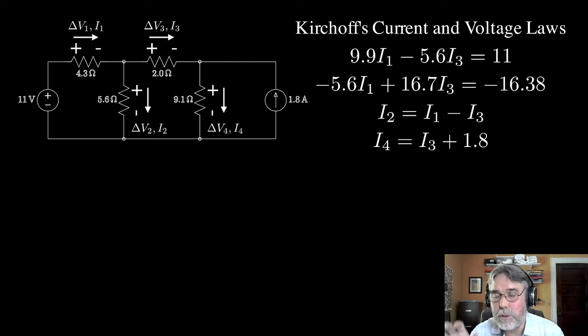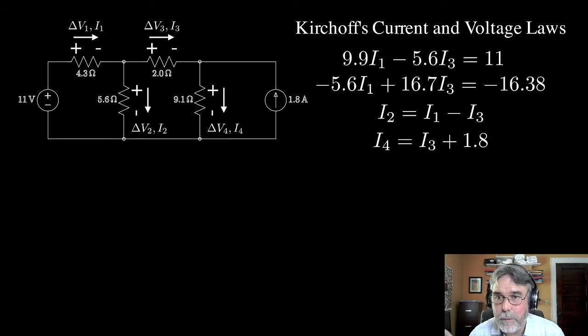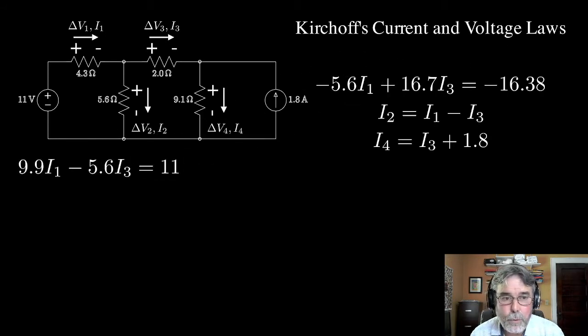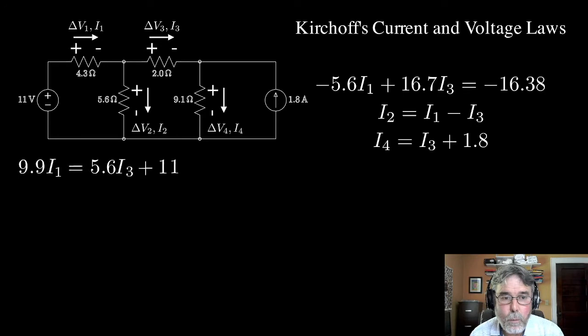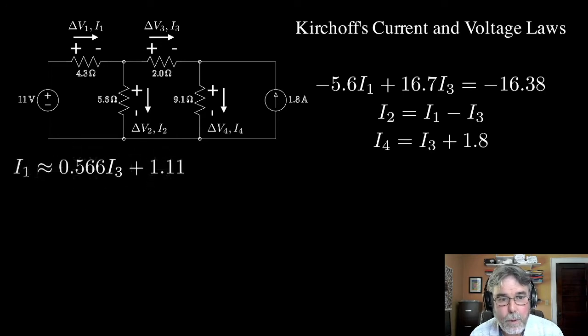So I've now, the top two equations, I've now gotten rid of I2 and I4 completely. They're only in terms of I1 and I3. So now I can move that top equation, let's scoot it over here where we have room. And then let's solve for I1 in terms of I3. We'll collect terms together and then approximate the fractions as decimals. So I get I1 approximately equal to 0.566 times I3 plus 1.11.